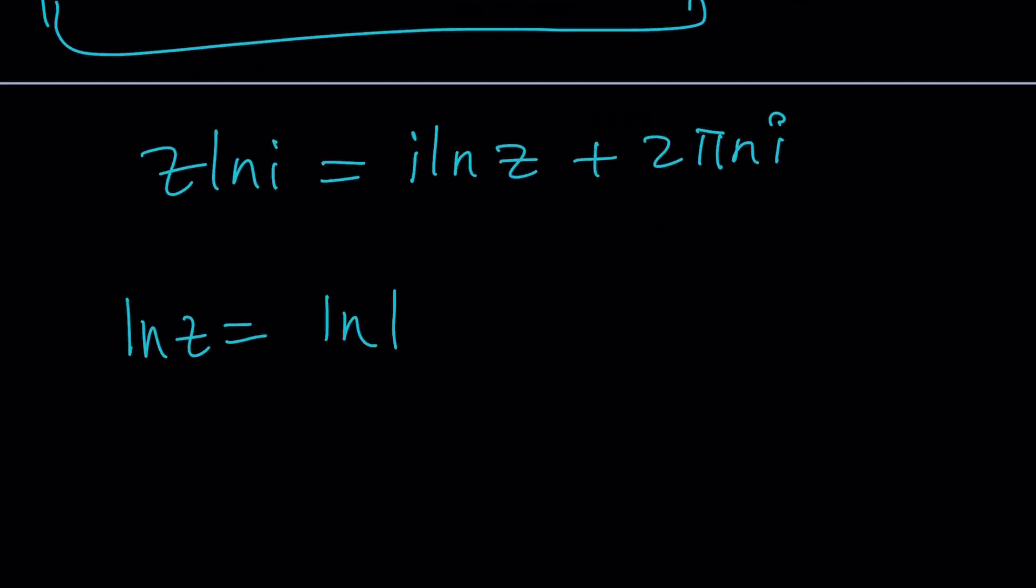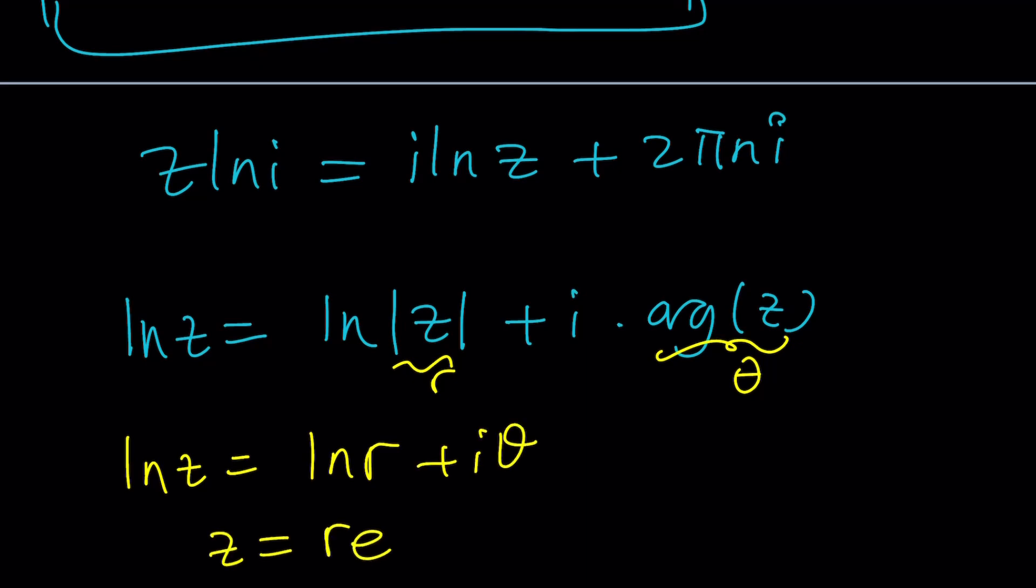ln z is defined as ln absolute value of z plus i times the argument of z. And by the way, if you just use substitution, call this r and call this theta, ln z can be written as ln r plus i theta. If z can be written as r times e to the i theta. Make sense? That's how you can write the natural log or log of a complex number. And again, this is multi-valued because you're allowed to add 2πni multiples of 2π to it.